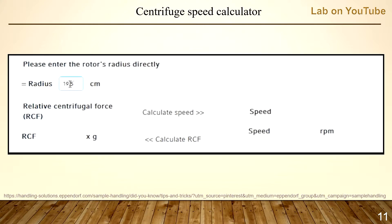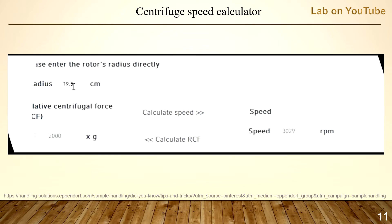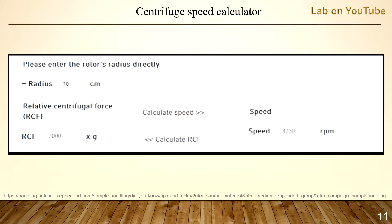The easiest way to calculate RPM is using a speed calculator — just plot your numbers and calculate speed. It's a good exercise to enter your centrifuge's radius and the RPM you are currently using to calculate the actual RCF. If you get an RCF less than 2000 G, please contact your lab, as we don't use less than 2000 G for general pathology testing. Note: the speed calculator is more accurate than the nomograph.